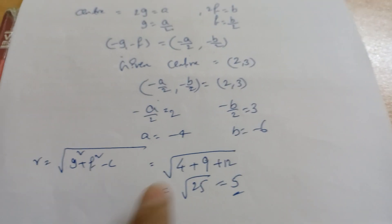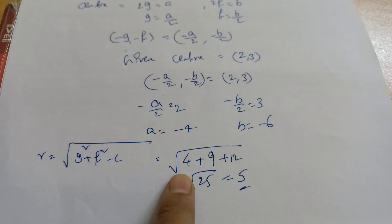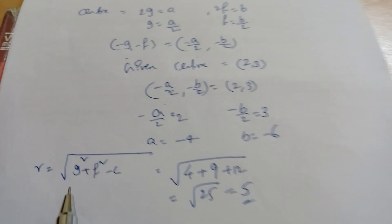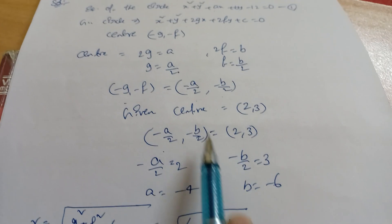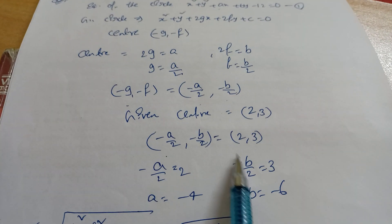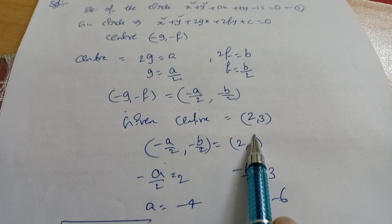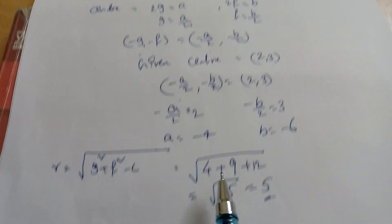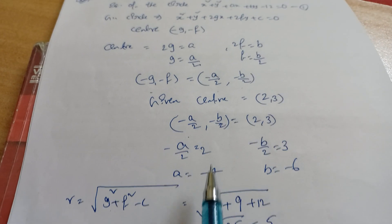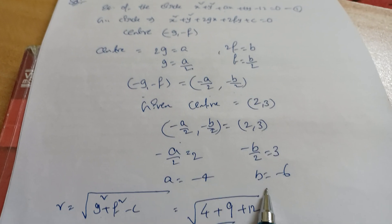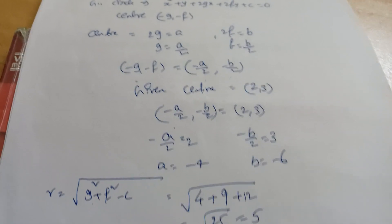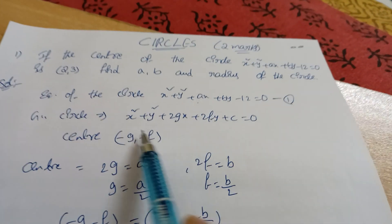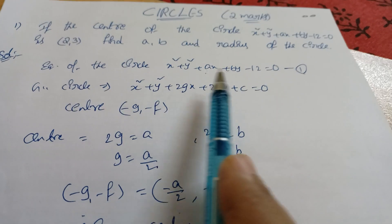So the answers for problem 1: a = −4, b = −6, and radius = 5. Two answers — a, b values and the radius of the circle.